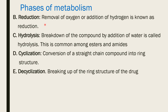Reduction — the removal of oxygen or addition of hydrogen — is known as reduction. Hydrolysis — breakdown of a compound by addition of water — is common among esters and amides. Cyclization involves conversion of a straight-chain compound into a ring structure, and de-cyclization is the breaking up of a ring structure into a straight chain. These are the various types of Phase 1 metabolism reactions.